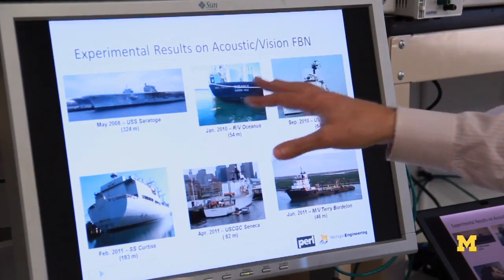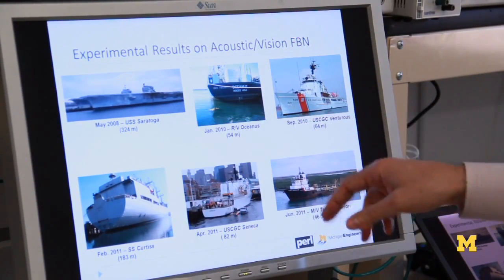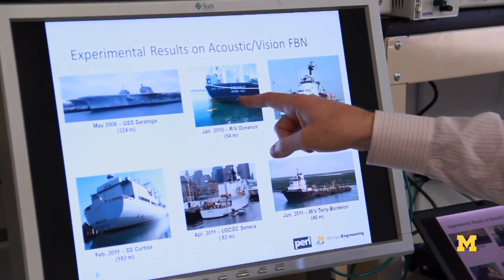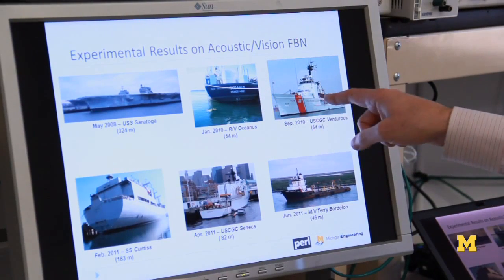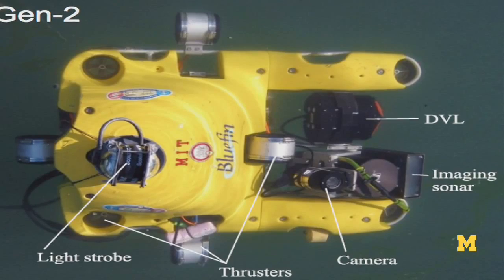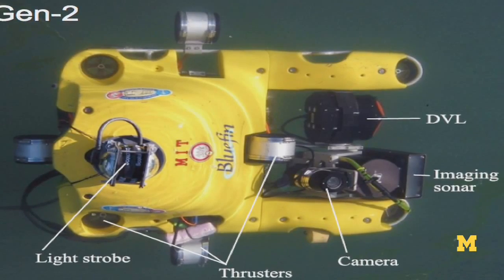We've tested this on a variety of different hulls, ranging from U.S. aircraft carriers to oceanographic research vessels to U.S. Coast Guard vessels. This is a picture of the robot that we use for this project. It's called the HAUV, which stands for Hovering Autonomous Underwater Vehicle.